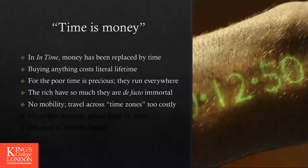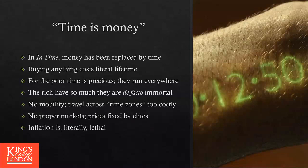In Time also enforces strong spatial segregation — there are time zones. If you want to move from a poor neighborhood to a rich neighborhood, the price is so high that there is effectively no mobility. You can do it, it's not enforced by coercion, but you die trying to move from one time zone to another. It's a command economy in the sense that there is no price system — prices are fixed by elites. In one passage of the film, price levels are used as a way of crushing a revolt. And inflation is literally lethal: when prices go up and you want to buy your coffee or your trip, you die.